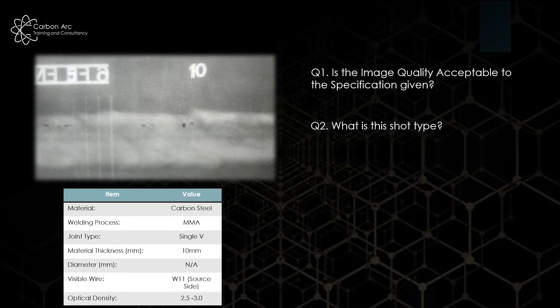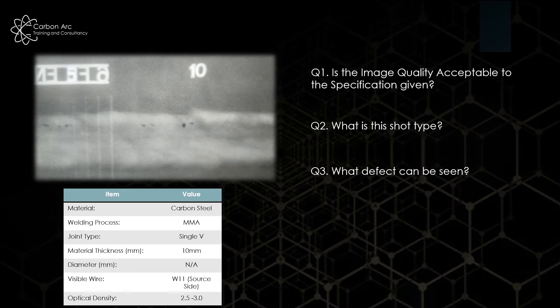You may then get a question such as: what type of shot is this? You'd work through the logic — for example, you're given the material thickness but no diameter, so you'd assume it's a plate, making this a single wall single image. Then for the defect question you make a judgment call on what you can see. For instance, here we can see a few bits of slag running along the toe of one of the welds — and we know it's slag and gas pores because MMA is the welding process being used.